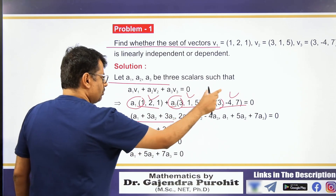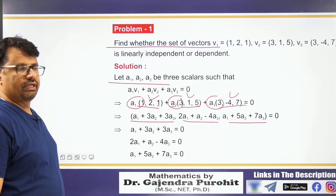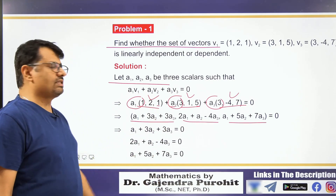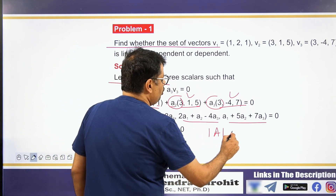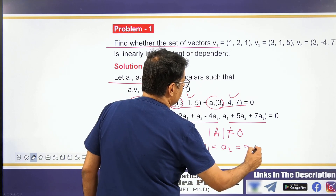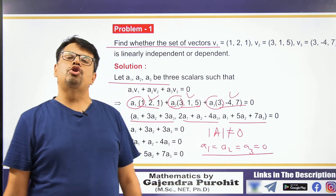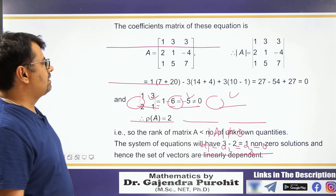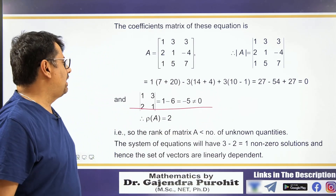We set up the equations: 2A1 + A2 − 4A3 for the second equation, and the third equation. We solve this system of three homogeneous equations. For a homogeneous equation there are two cases: if the determinant is not equal to zero, then A1, A2, A3 are all zero — this is the trivial solution. We will check whether the determinant here is non-zero or not.